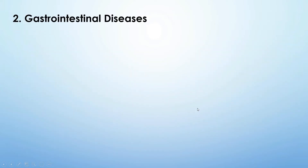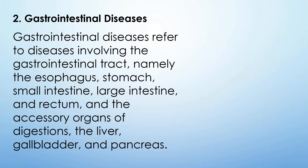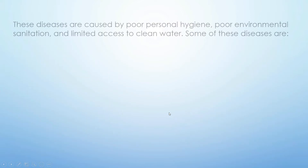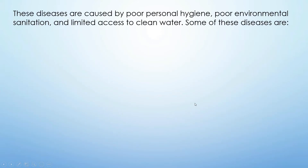Number two is gastrointestinal diseases. Gastrointestinal diseases refer to diseases involving the gastrointestinal tract — namely the esophagus, stomach, small intestine, large intestine, and rectum — and the accessory organs of digestion: the liver, gallbladder, and pancreas. These diseases are caused by poor personal hygiene, poor environmental sanitation, and limited access to clean water.